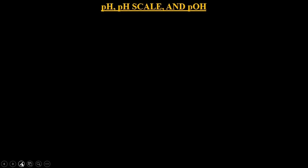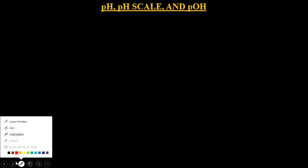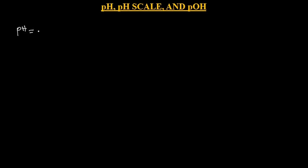pH is the negative logarithm of H3O+ concentration. So mathematically, pH is equal to negative log of [H3O+]. The square bracket tells us it is the concentration.